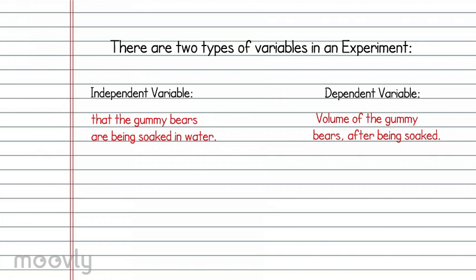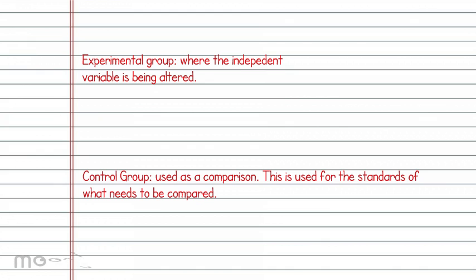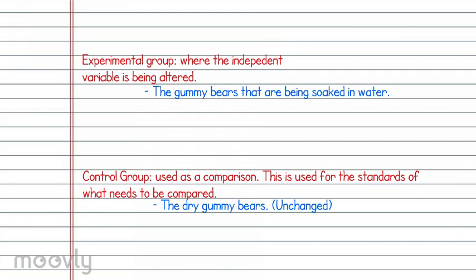A valid experiment will both have an experimental group, where the independent variable is altered, and the other group is the control group. The control group is used as a comparison group, so you have standards to compare against your changes. The gummy bears placed in the water are the experimental group, and the dry gummy bears would be the control, as they are unchanged.